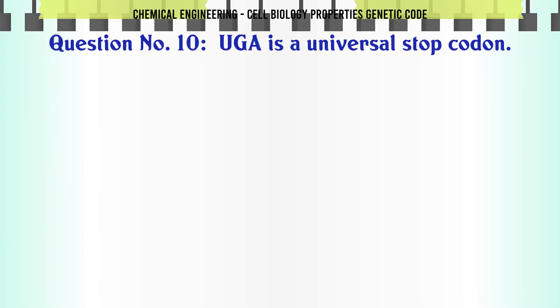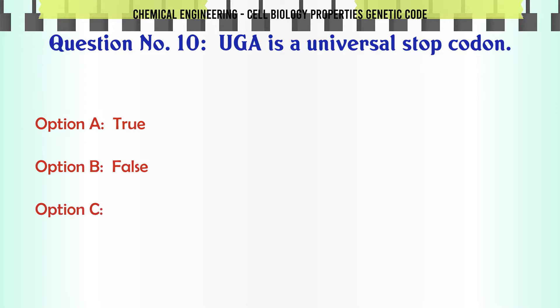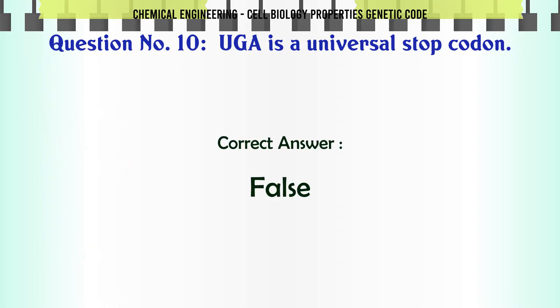UGA is a universal stop codon — A) True, B) False. The correct answer is False.